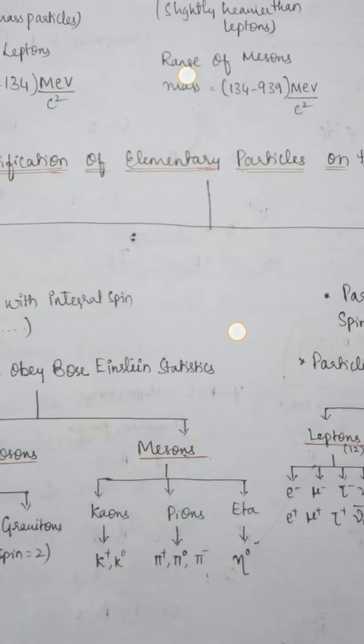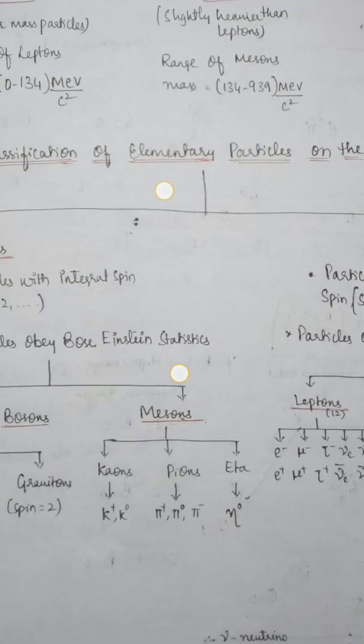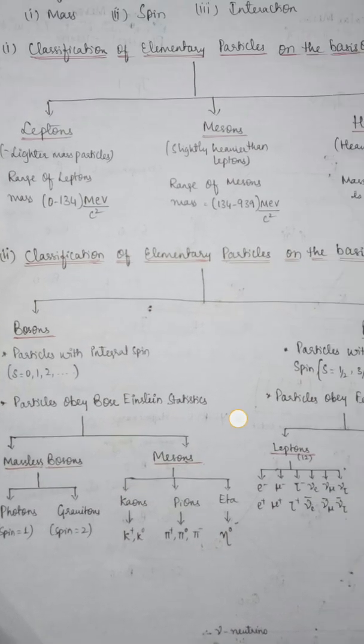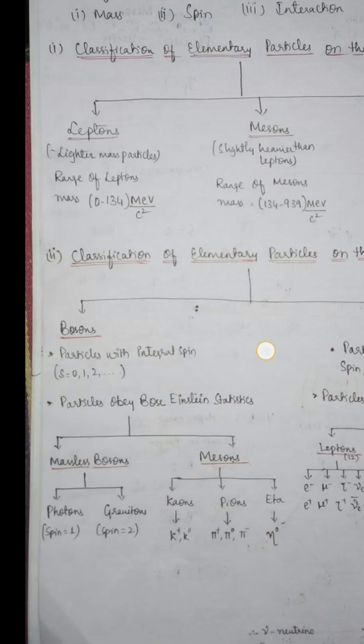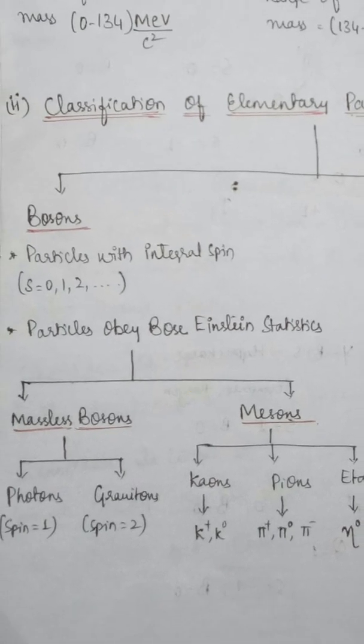Next is the classification of elementary particles based on spin. On a spin basis, elementary particles are divided into two groups: bosons and fermions. Bosons are particles with integral spin.